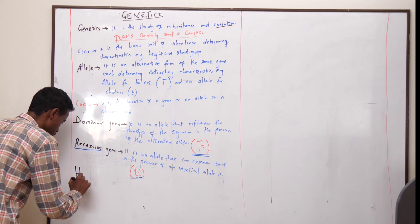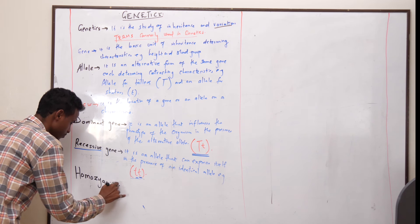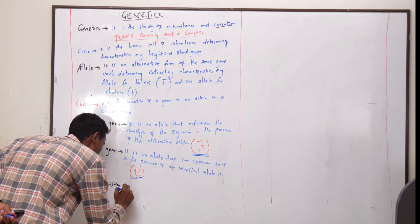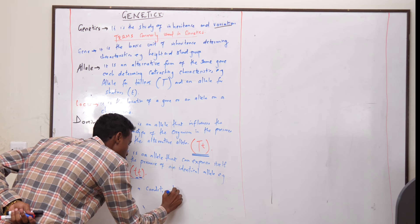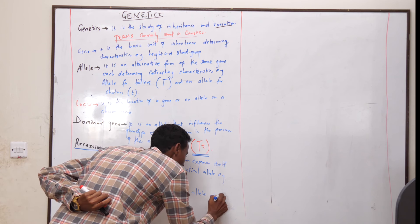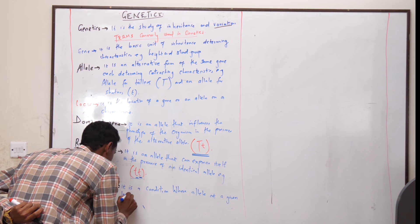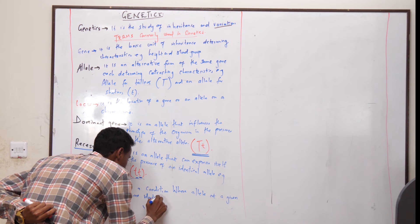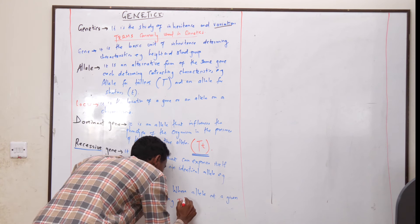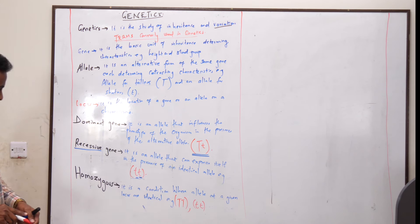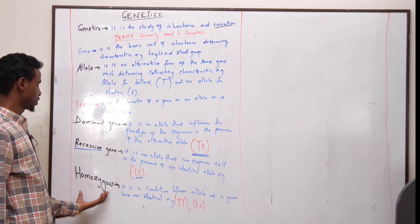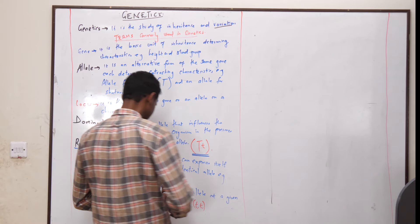Next is homozygous. Homozygous is a condition where alleles at a given locus are identical. For example, TT or tt — in each locus we can either have the allele for tallness as identical or the allele for shortness as identical. In such a condition we call it the homozygous condition.